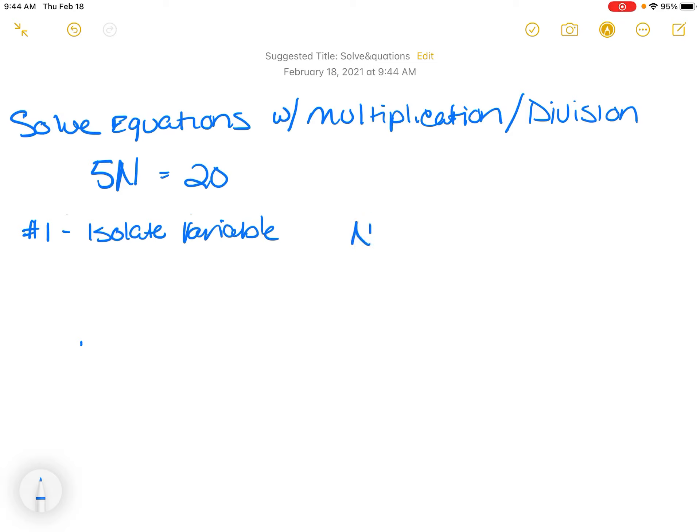we know that to get n by itself, to move it over, there'll be 20 divided by 5. So in this particular type of scenario, the 5 is going to move from here to here. So we've now isolated the variable.